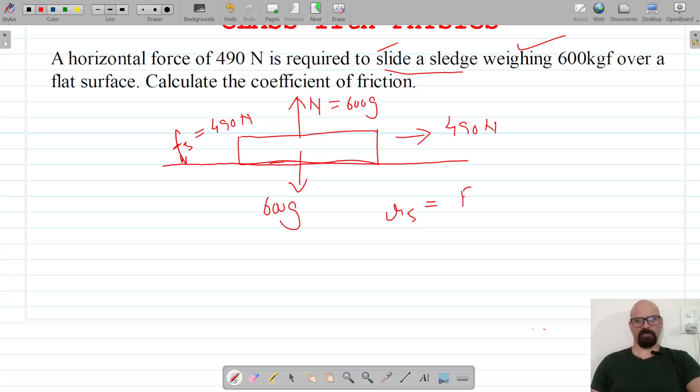Now the coefficient of friction is given by F_s, the maximum value of static friction, divided by N. That's 490 divided by 600 times g, and let g be 10 meters per second squared.